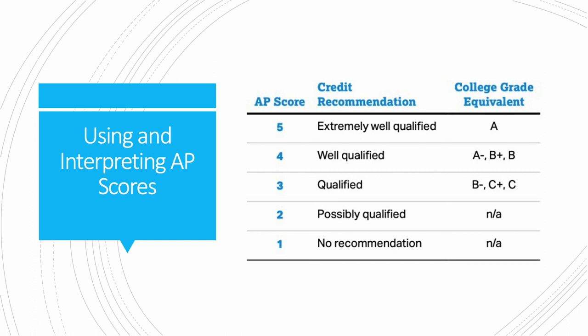Using and interpreting AP scores: scores on the AP range from 1 to 5, with 1 being the lowest and 5 the highest. A 5 is interpreted as a solid A — extremely well qualified. A 4 is well qualified, ranging from A- to B depending on whether it's a high 4 or a low 4. A 3 is qualified, ranging from B- to C. A 2 is possibly qualified, and a 1 is not recommended.